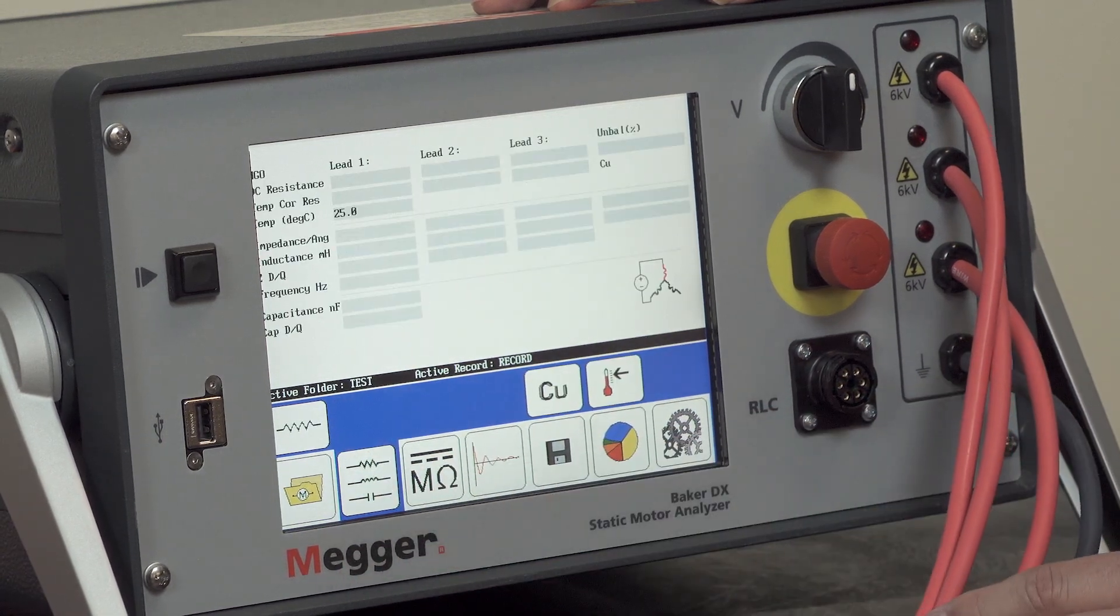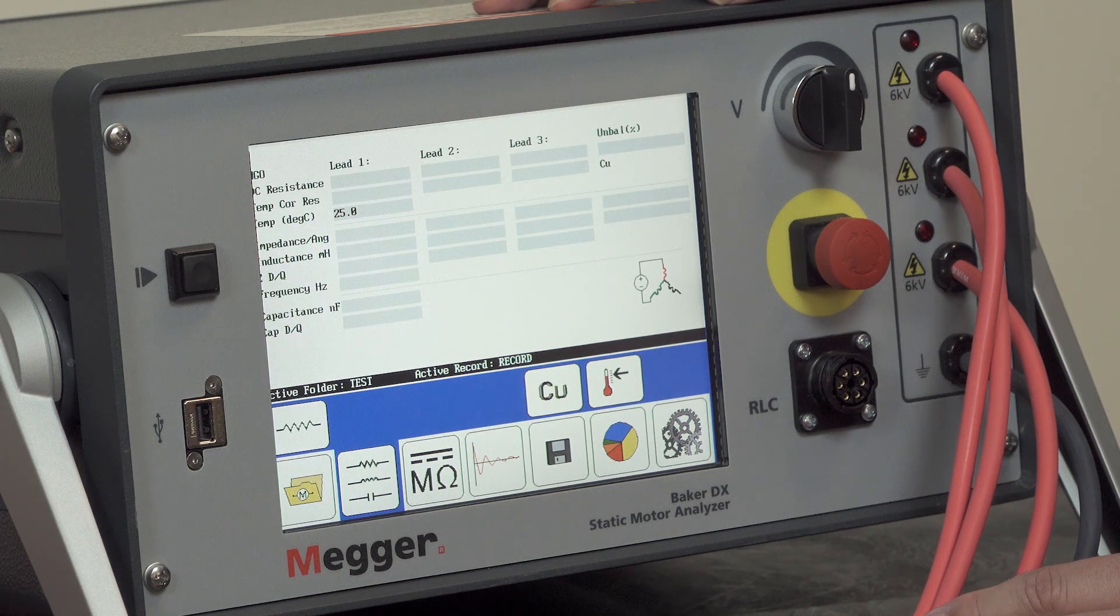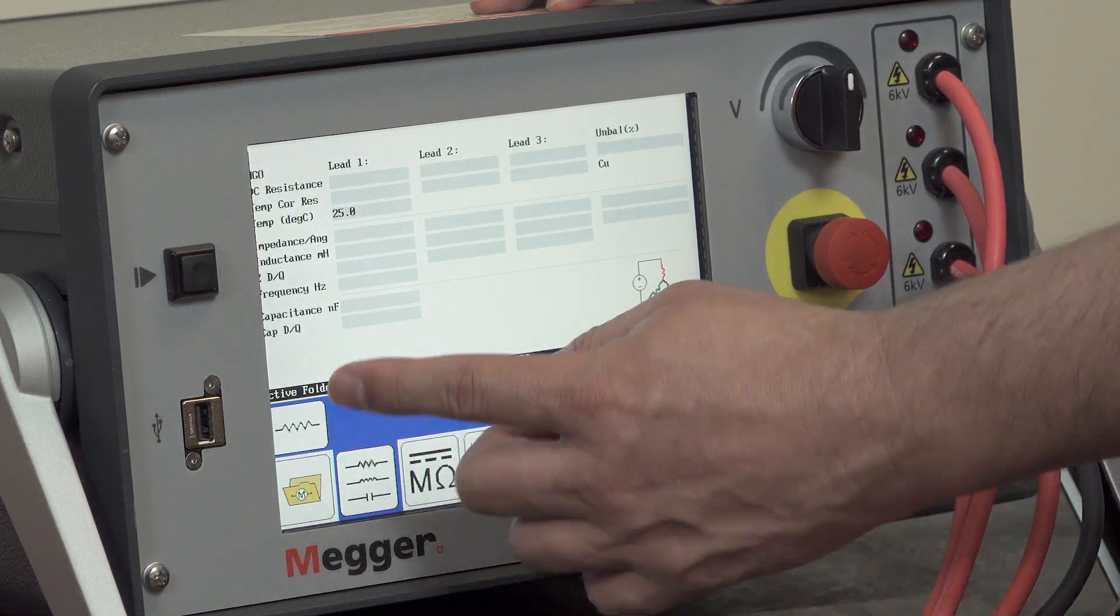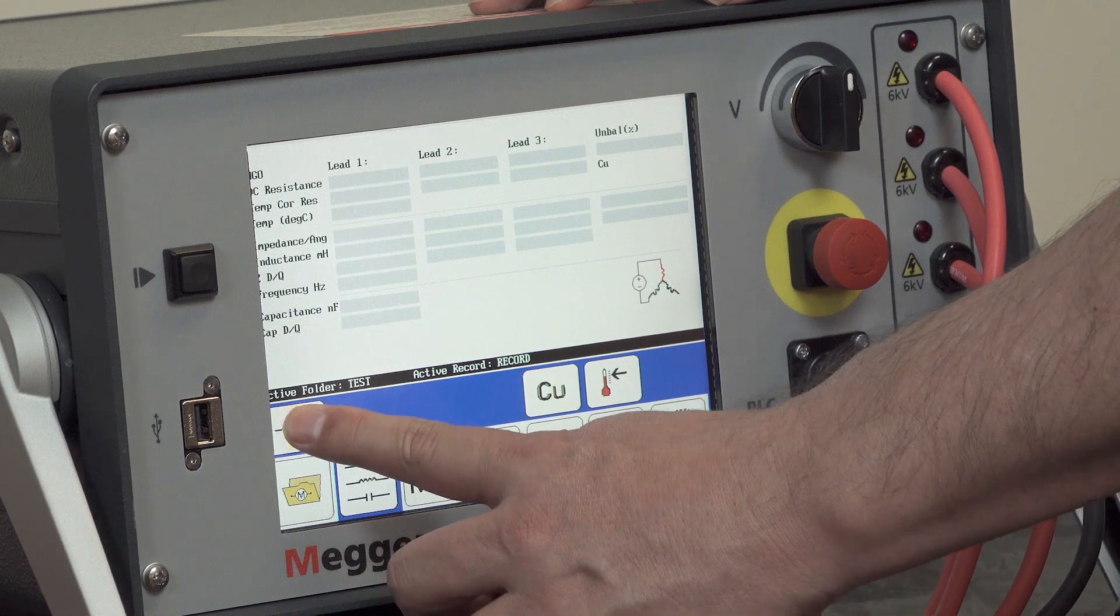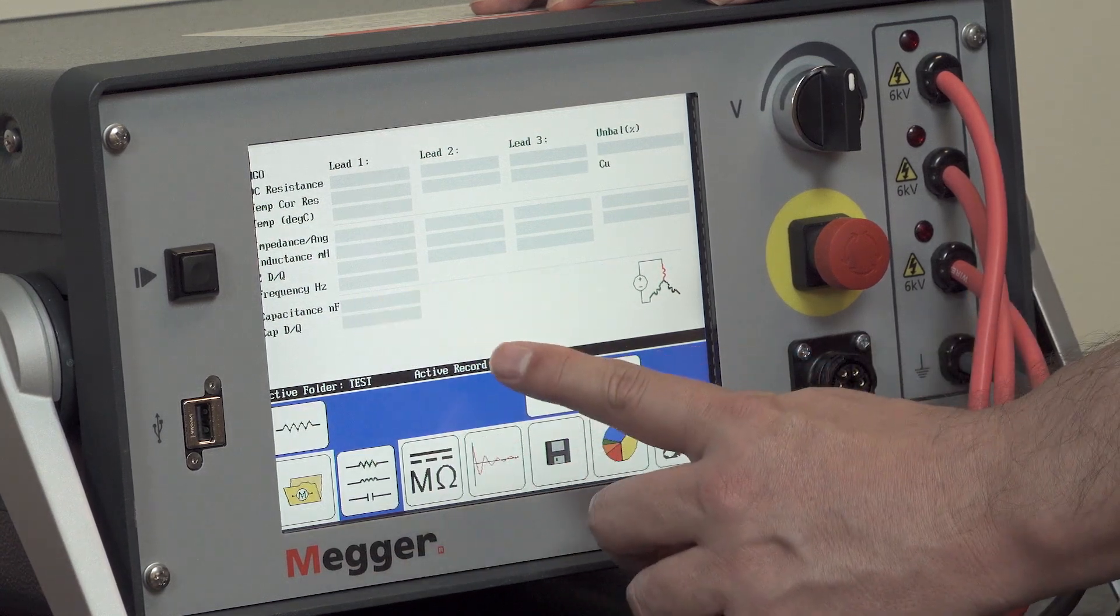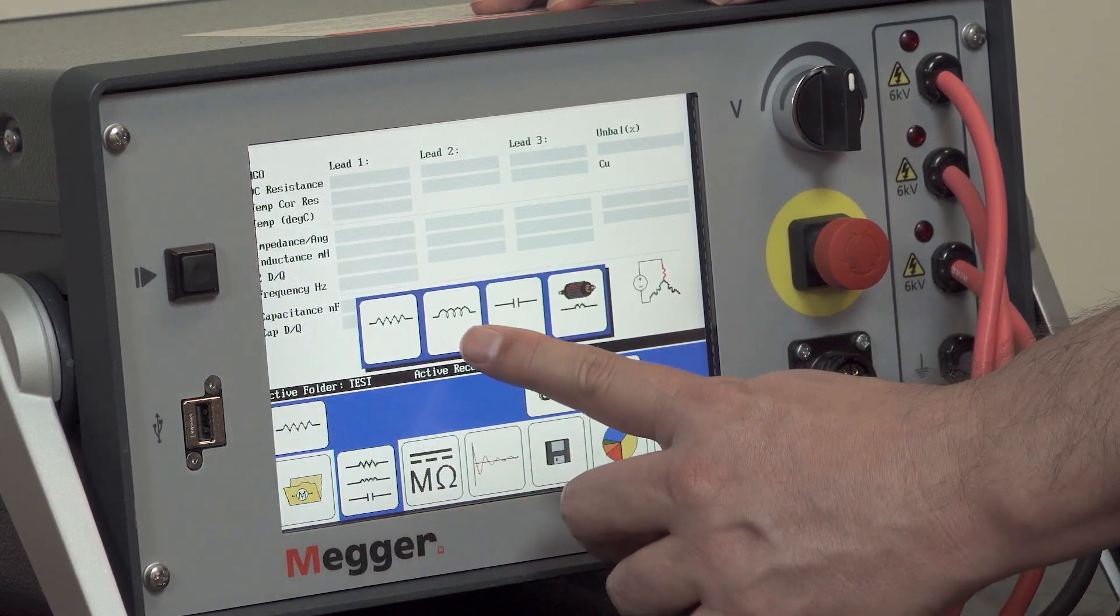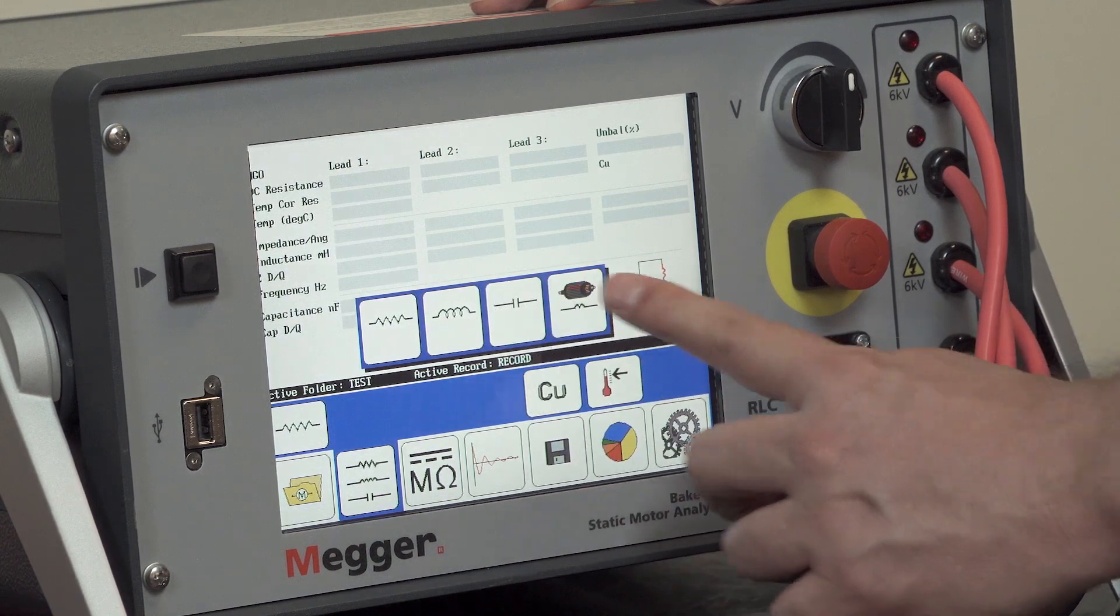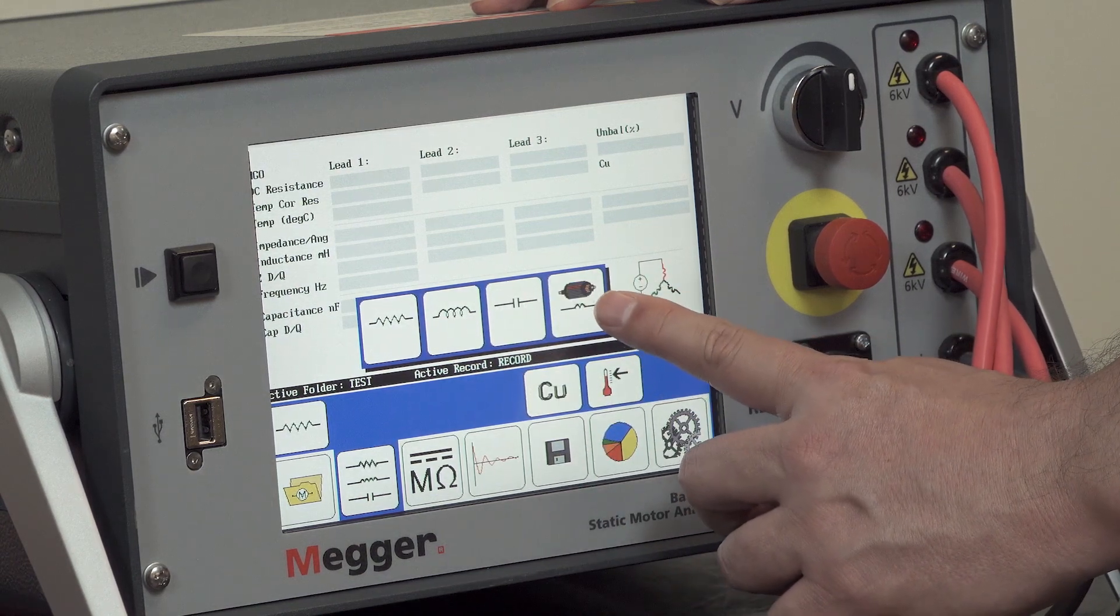The next icon is the resistance, inductance, and capacitance testing screen. This screen has options for selecting which type of low voltage test you want to perform: resistance, inductance, capacitance, or single phase or armature test.